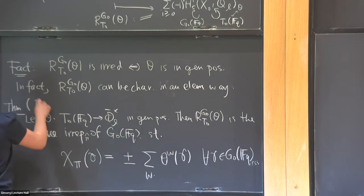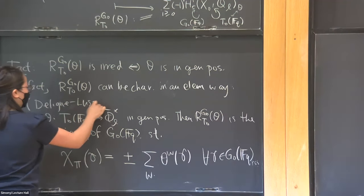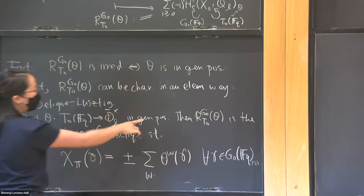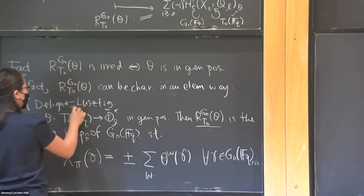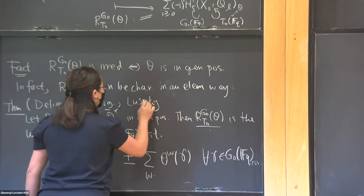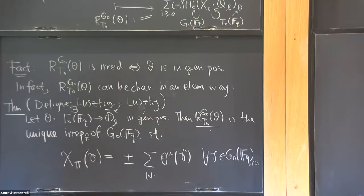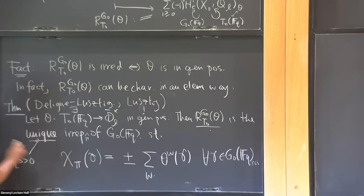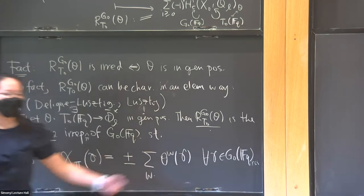This theorem — the existence and the formula — is due to Deligne and Lusztig, and uniqueness is due to Lusztig. One slight comment: this uniqueness requires a largeness condition on q, basically because if q is too small, you can't tell the difference between character values.